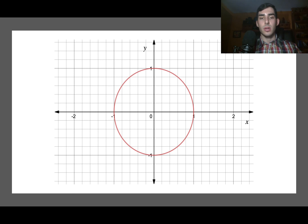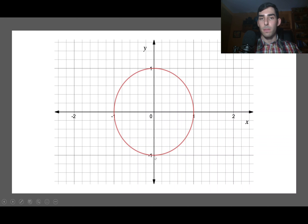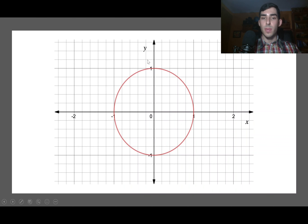We can see this graphically: the unit circle is not a function because for each value of x in the range [−1, 1] there are two values of y. And reversing the relationship doesn't help — x is not a function of y either, since for each value of y there are also two values of x.